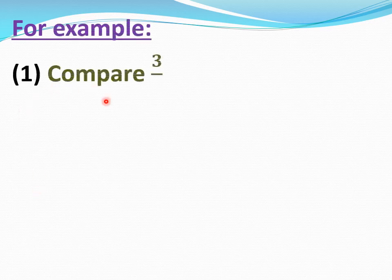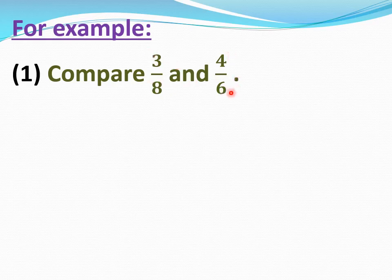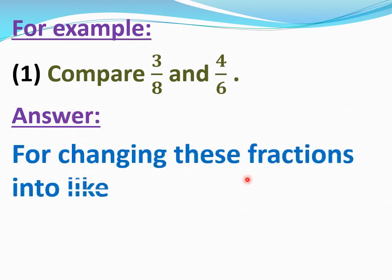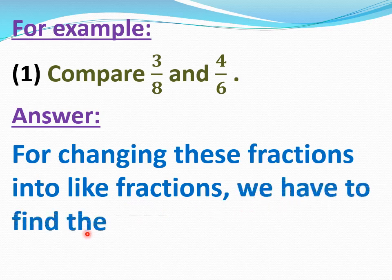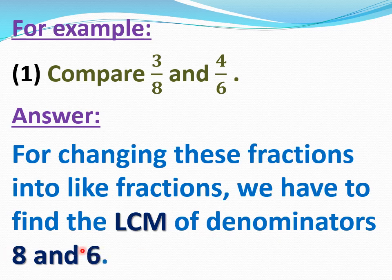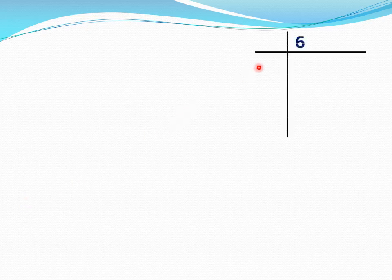For example, question number 1: compare 3 by 8 and 4 by 6. See, 3 by 8 and 4 by 6 are unlike fractions, so first we will convert them into like fractions. For changing these fractions into like fractions, we have to find the LCM of denominators 8 and 6. Find the LCM of 6 and 8. See, 6 and 8 are divisible by 2.